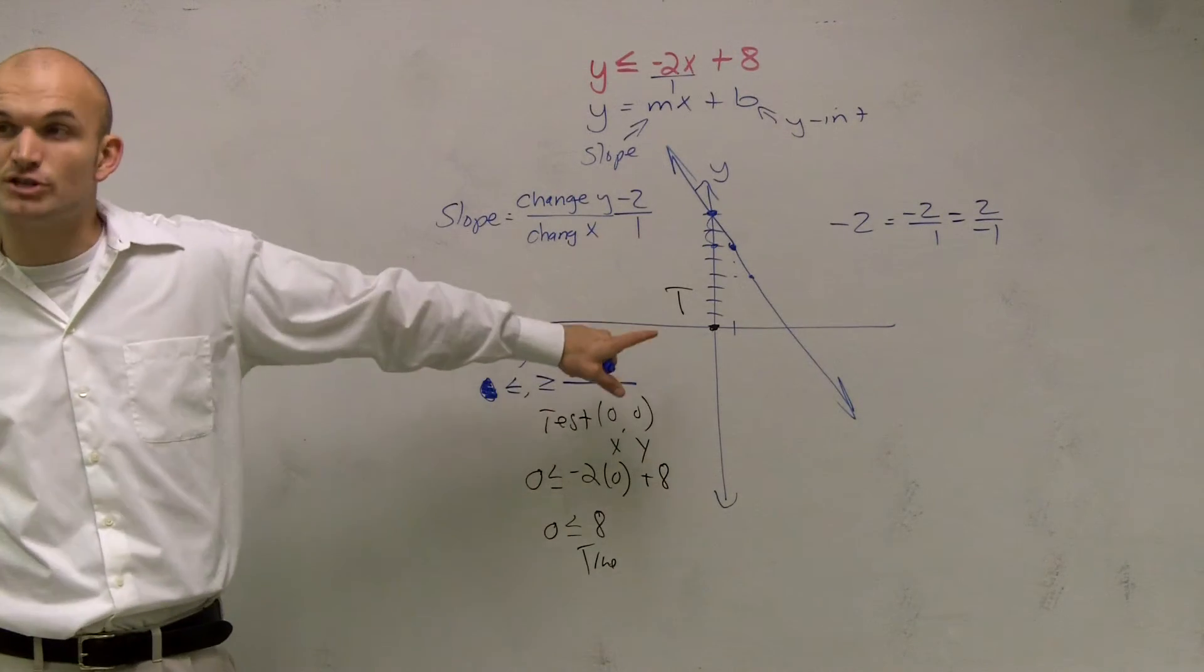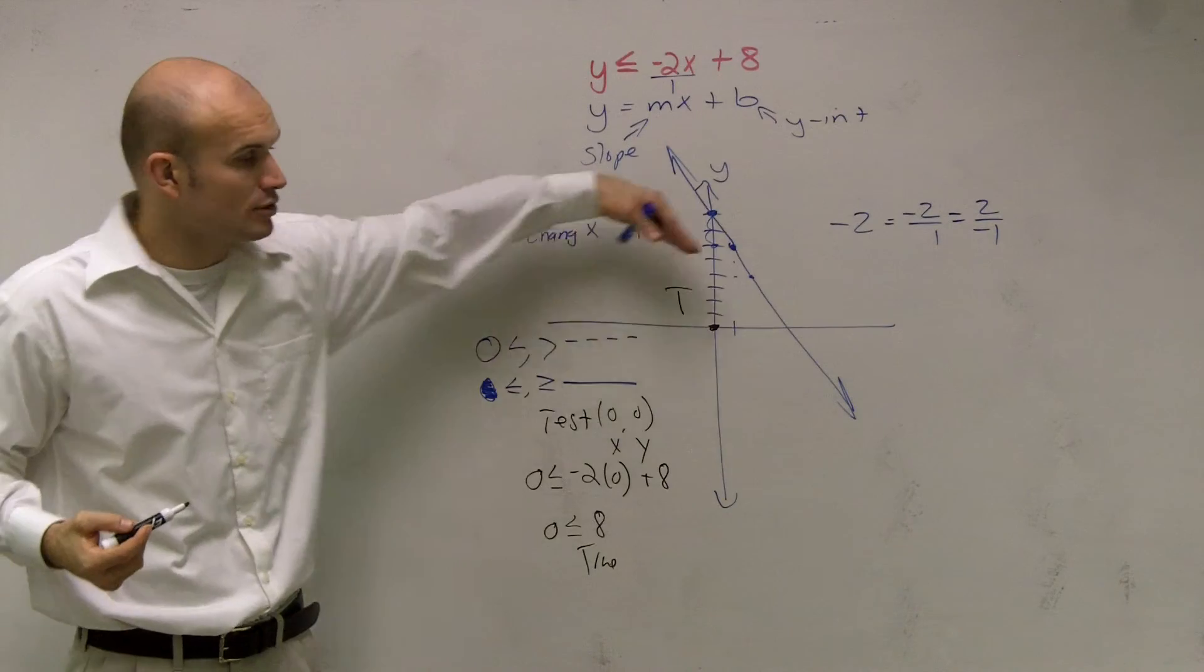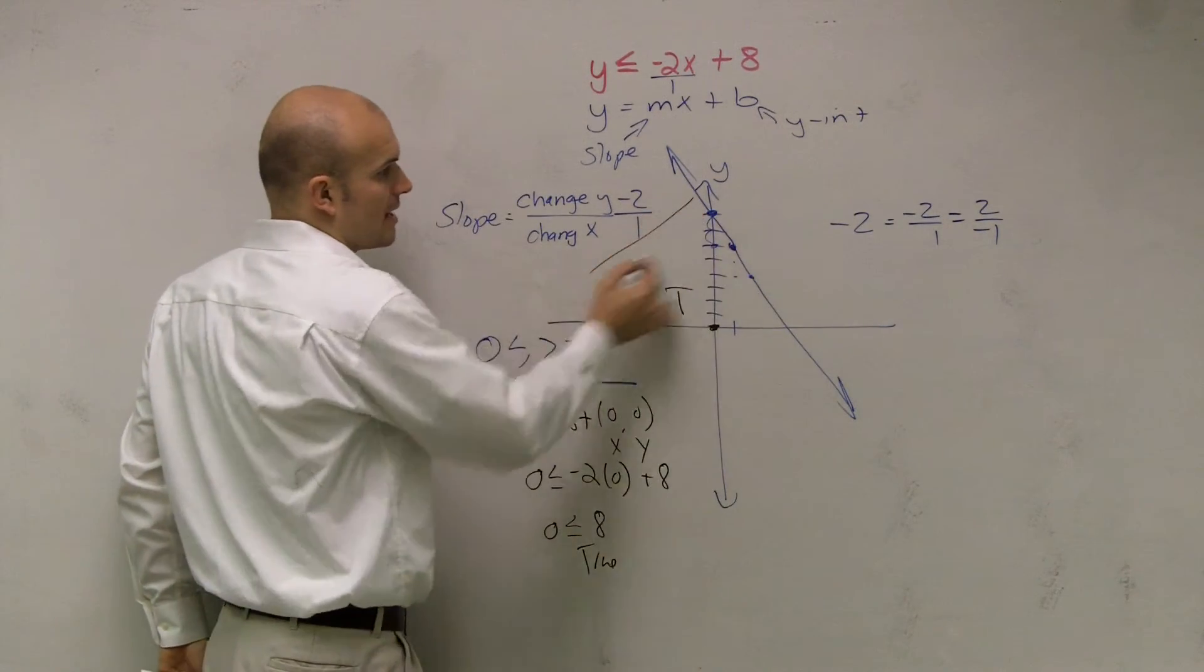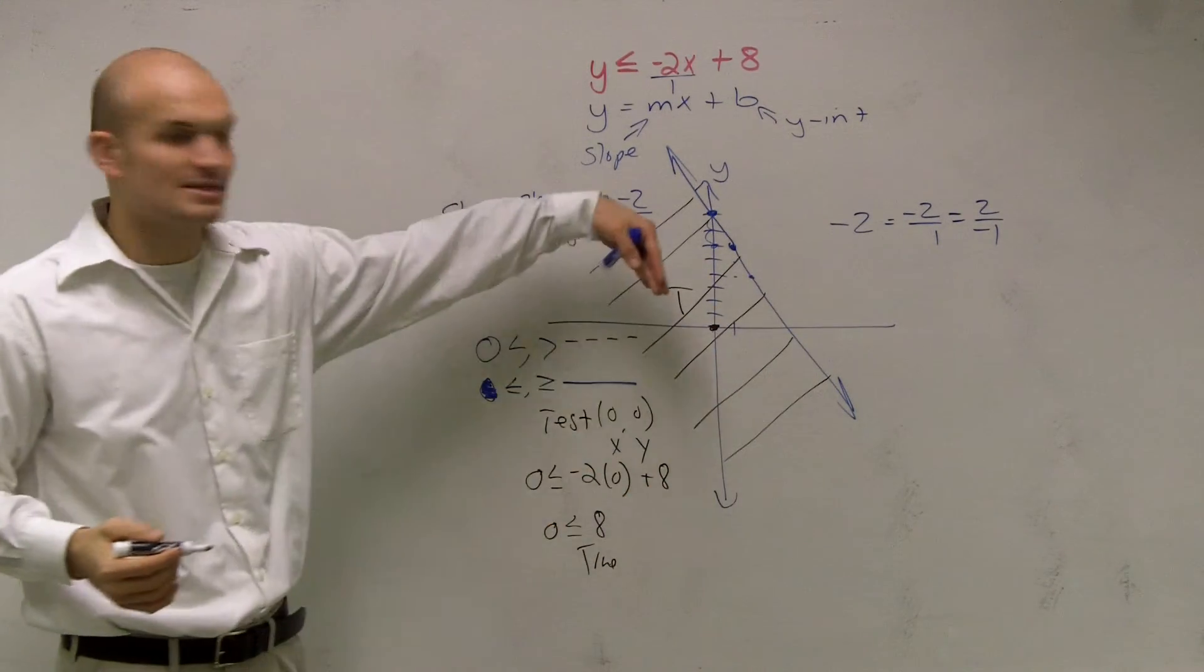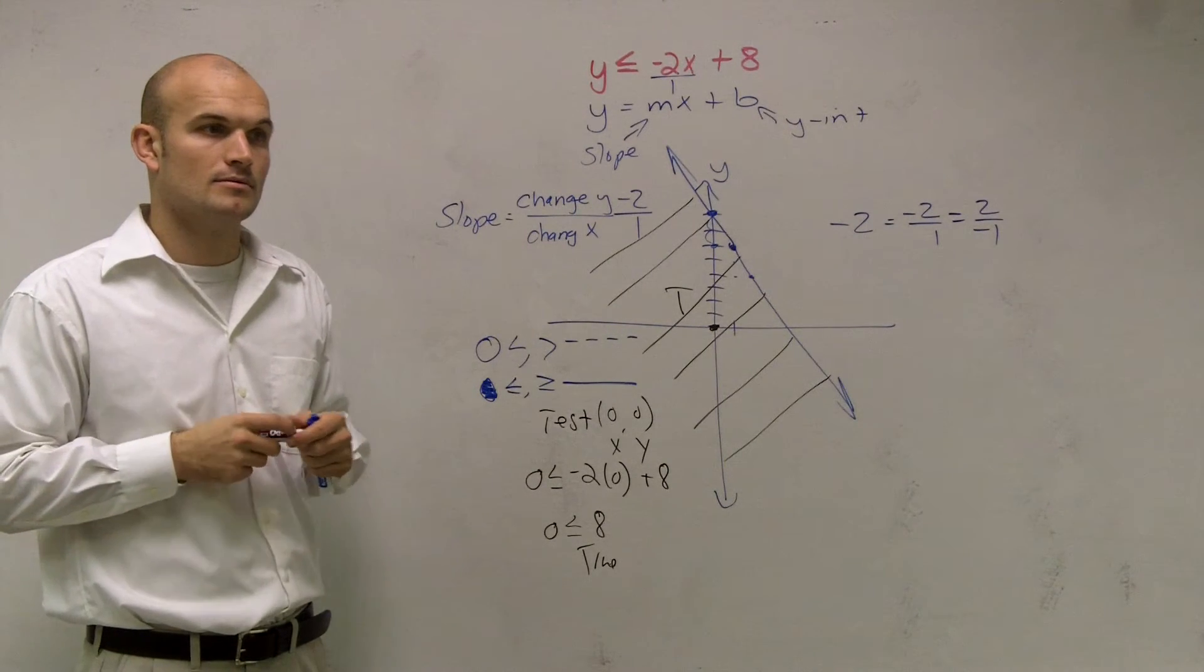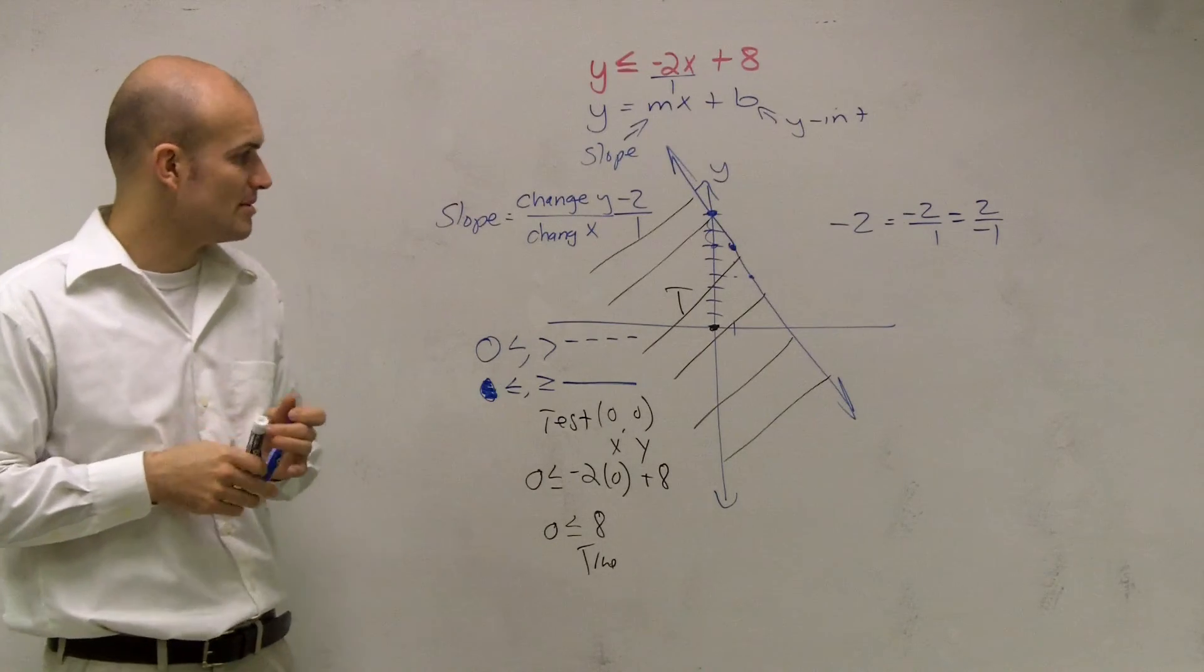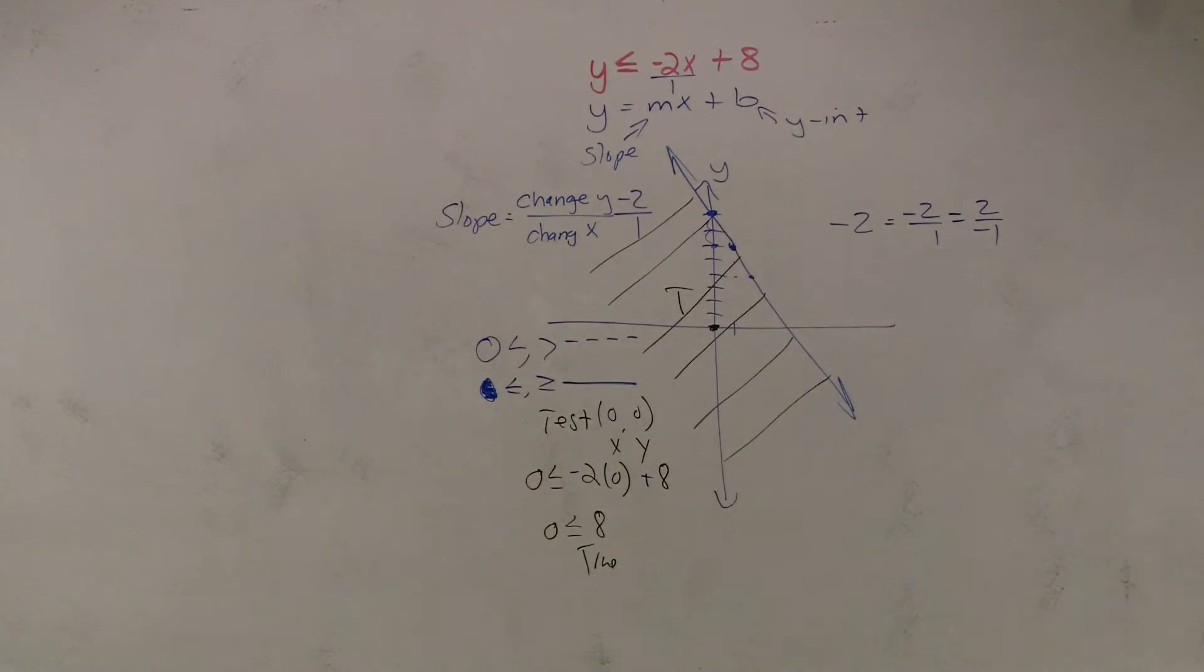So since (0, 0) is true, that's going to tell us all points below this line are also going to be true. To represent that, I'm going to draw these lines to shade them out. That's telling me that all the points below my line are going to be true. You can shade it in, but be careful. That's how you graph your inequality.